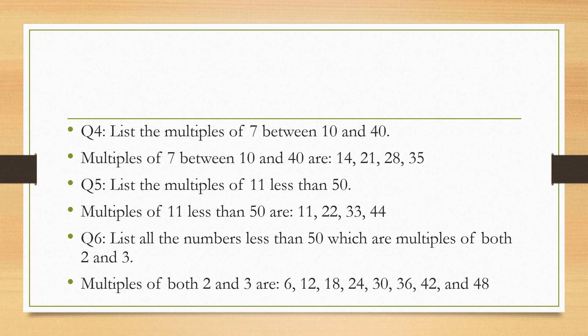Question number 6: list all the numbers less than 50 which are multiples of both 2 and 3. Now this is a very tricky question. For your rough working, you can first write the multiples of 2 and multiples of 3 till 50, and then you can select the common one between those two. So they are 6, 12, 18, 24, 30, 36, 42, and 48. These are the numbers that are less than 50 and they are multiples of both 2 and 3.